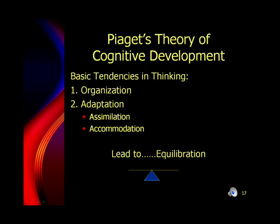Piaget believed that we have two basic tendencies when we're thinking: organization and adaptation. During the organization phase, we're trying to develop schemes around what we're experiencing — that's our way of organizing our thoughts. During the adaptation phase, as we learn new things, we're trying to accommodate them or assimilate them into our current schemes. His focus is that we're always seeking equilibration, which is a balance between what we're experiencing and what our initial schemes happen to be.